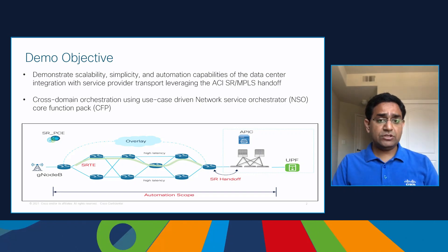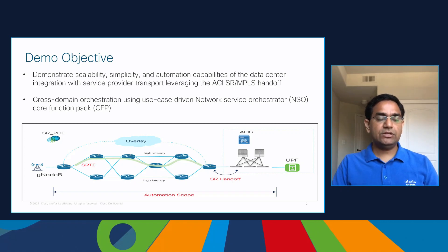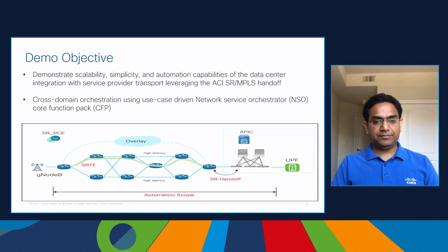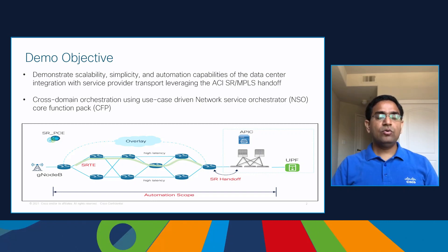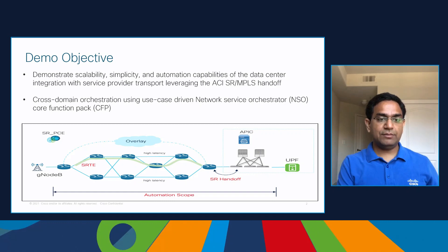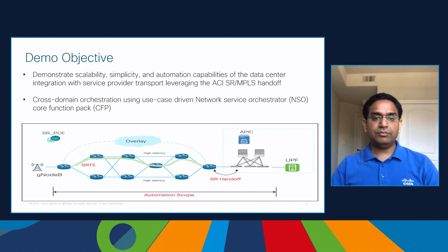In a 5G deployment, as a network admin you may need to deploy different kinds of applications. Some applications may require very low latency, such as healthcare applications or connected cars, while others may require very high bandwidth, for example video applications. There is a demand for network slicing, using which you can deploy all of these applications on the same network but give them different behaviors.